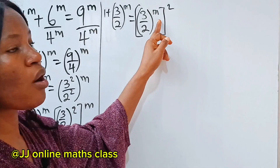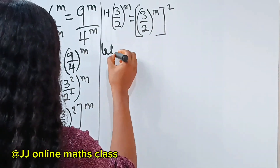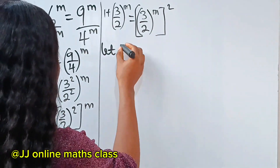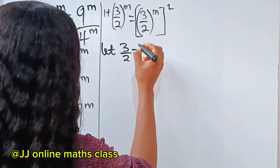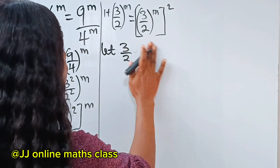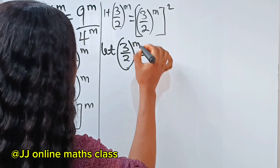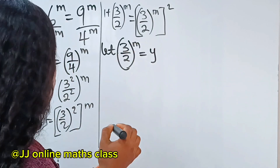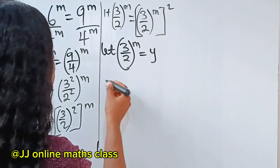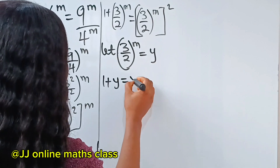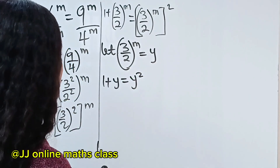We have 3 over 2 to the power of m appearing on both sides. Let's give it a variable — let 3 over 2 to the power of m equal y. So the equation becomes 1 plus y is equal to y squared.